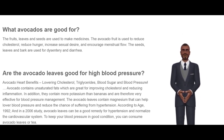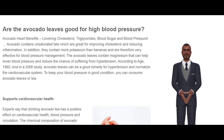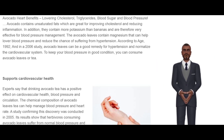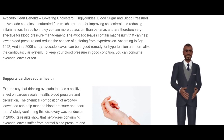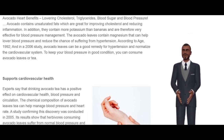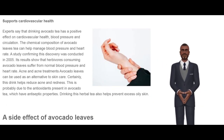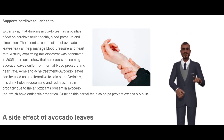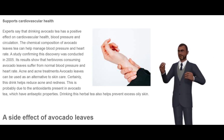Are avocado leaves good for high blood pressure? Avocado benefits for the heart include lowering cholesterol, triglycerides, blood sugar, and blood pressure. Avocado contains unsaturated fats which are great for improving cholesterol and reducing inflammation. They also contain more potassium than bananas and are therefore very effective for blood pressure management. Avocado leaves contain magnesium that can help lower blood pressure and reduce the chance of hypertension. Studies from 1992 and 2006 found that avocado leaves can be a good remedy for hypertension and help normalize the cardiovascular system.